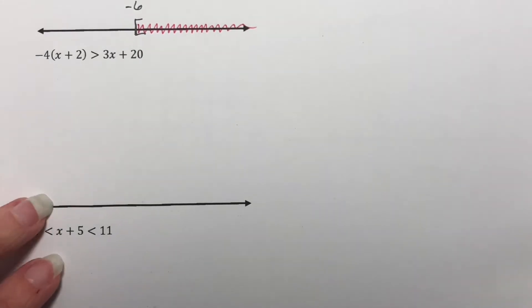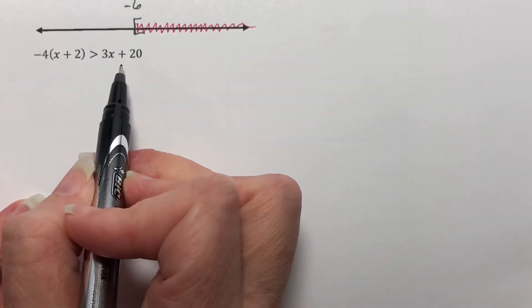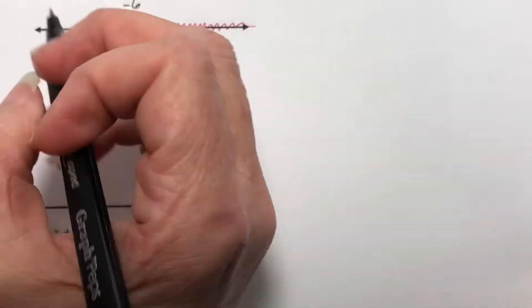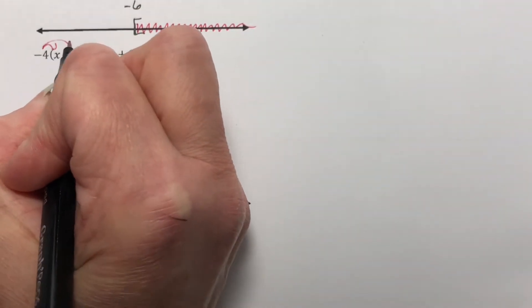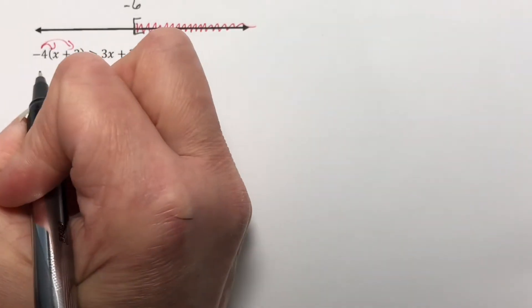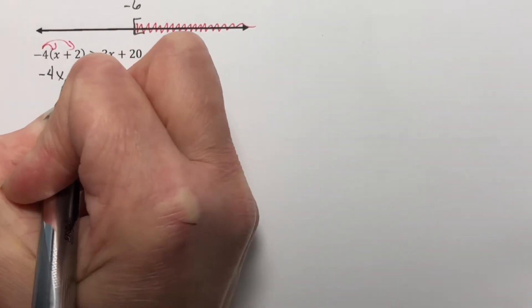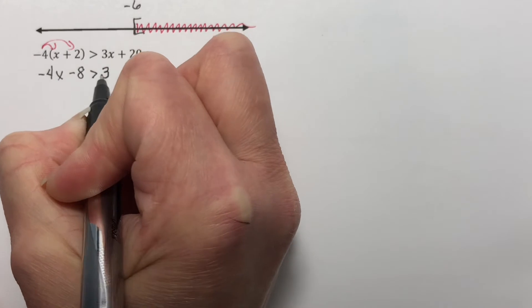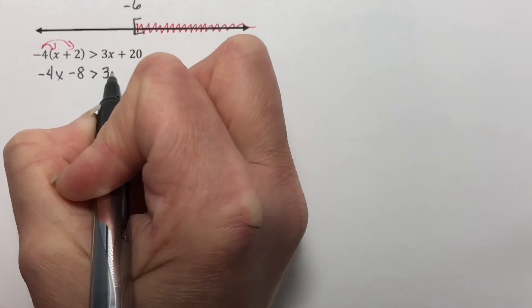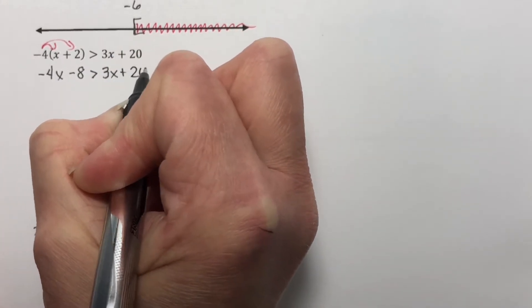This is part 2 of section 1.7. I want to solve this inequality, so the first thing I want to do is distribute this negative 4 and see where I end up. So negative 4x minus 8 is greater than or equal to 3x plus 20.